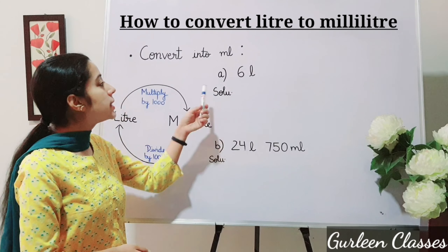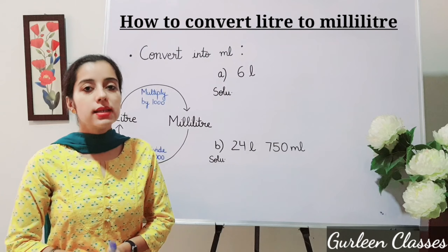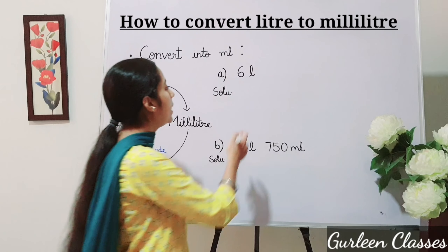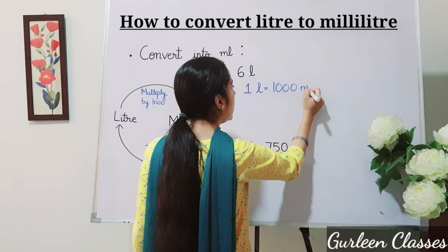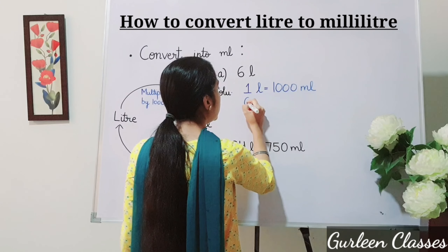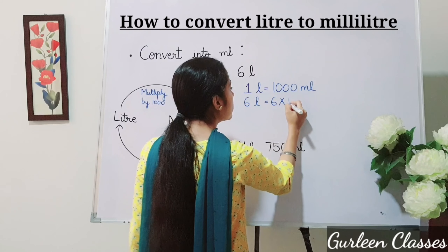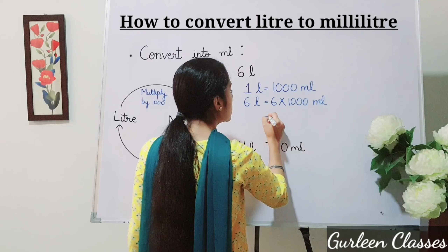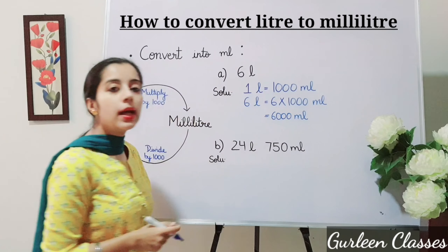Part A: six liter. We know that one liter is equal to one thousand milliliter. So six liter is equal to six multiplied by one thousand milliliter. The answer is six thousand milliliter.